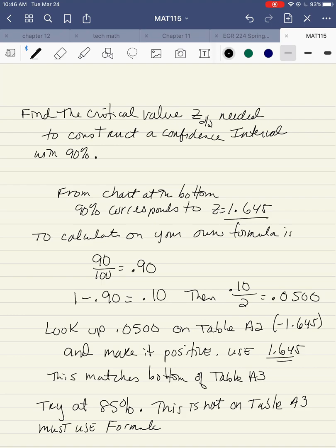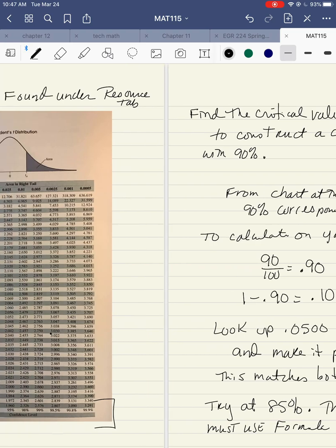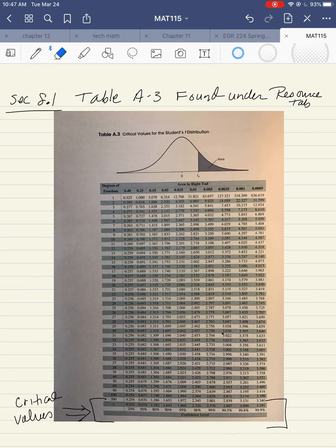On the first example, find the critical value, which is those Z numbers that come from the chart. This has two different notations. You can either have it notated as Z alpha over 2, or I will also refer to it as Zc for critical value. So find the critical value needed to construct a confidence interval with 90%. If you look at the chart, 90% is here on the chart.